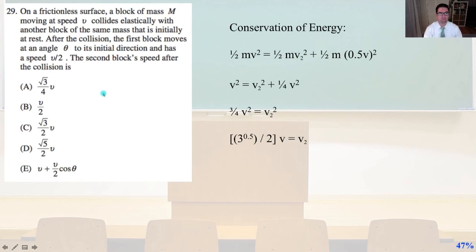Problem 29. On a frictionless surface, a block of mass M, moving at speed V, collides elastically with another block of the same mass that is initially at rest. After the collision, the first block moves at an angle theta to its initial direction and has a speed V over 2. The second block's speed after the collision is... And we're just going to apply the conservation of energy here. 1 half M V squared equals 1 half M V2 squared plus 1 half M times 0.5 V, that quantity squared. V squared equals V2 squared plus 1 quarter. We're going to apply the square root to the 0.5. 3 fourths V squared equals V2 squared. 3 square root divided by 2 times V equals V2. And that is answer C.